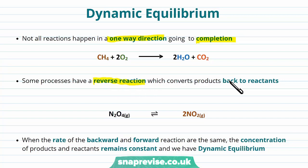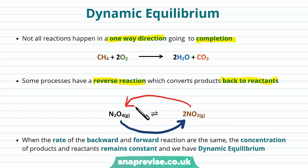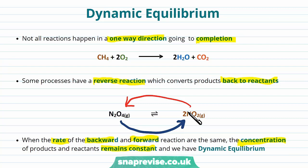If we look at the example of N2O4, we see that as N2O4 is converted into NO2, the NO2 is also being converted back into N2O4, and we get an equilibrium set up between the two. When the rate of the backward reaction and the forward reaction are the same — so as much N2O4 is being converted into NO2 as is going the other way — the concentration of the products and the reactants remains constant. So we have a dynamic equilibrium.